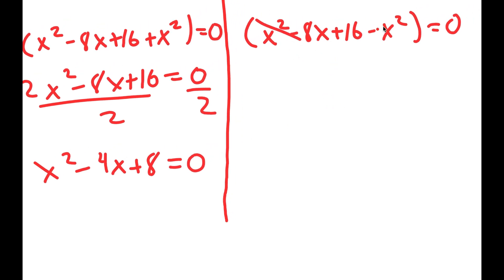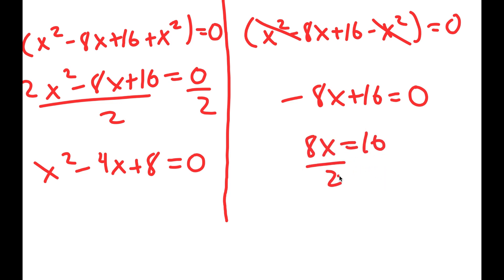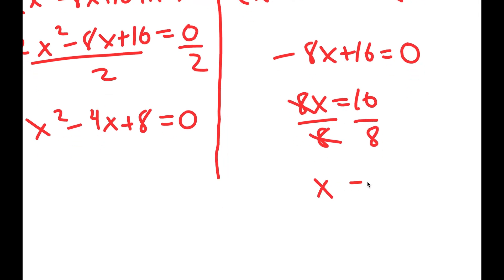For the right-hand side equation, these two x squared terms cancel out, leaving negative 8x plus 16 is equal to 0. I'm going to solve this first by adding 8x on both sides, so I get 8x is equal to 16. Dividing both sides by 8, these two cancel out and I get x is equal to 2.